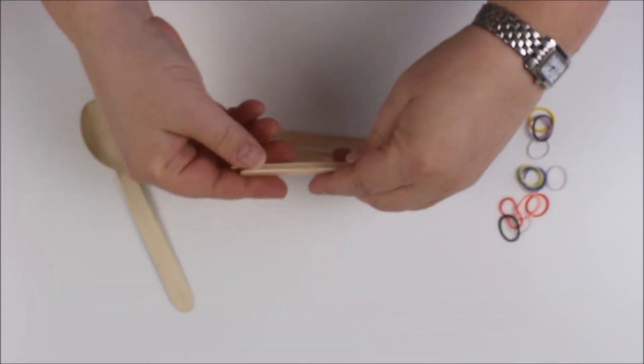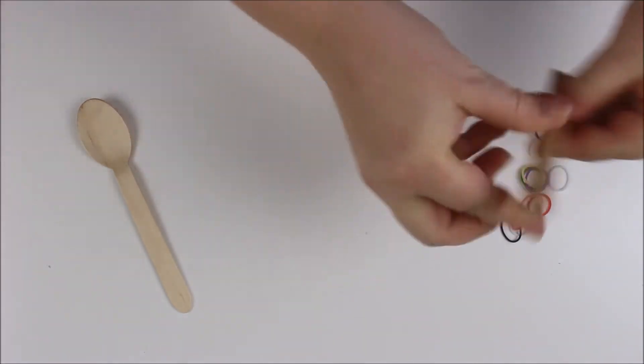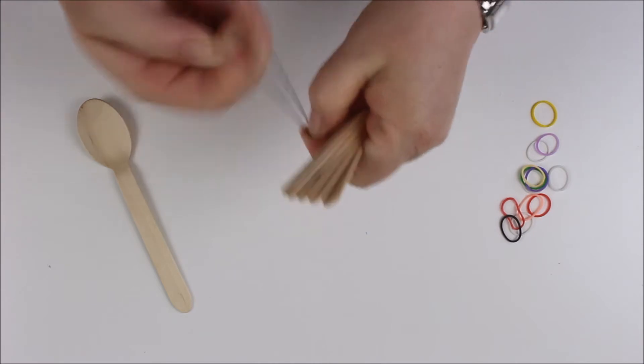So first of all, I'm going to attach a stack of lolly sticks with a loom band at each end. I'm using five lolly sticks.